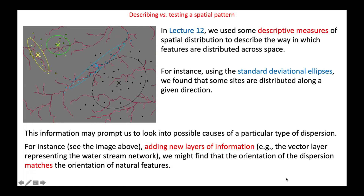As you may remember from previous lectures, we can discover patterns in spatial data by using descriptive measures of spatial distribution, such as the mean center and the standard deviational ellipses. By doing so, we may find out that there could be a pattern of association between, for instance, the archaeological sites we are interested in and some natural features like water streams.